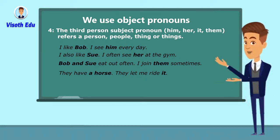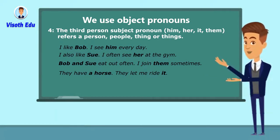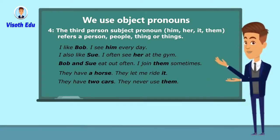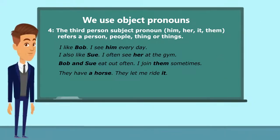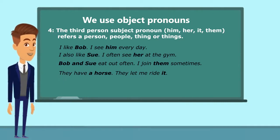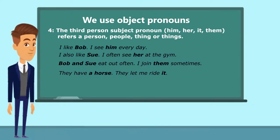'They have a horse, they let me ride it' — 'it' is the object pronoun that takes the place of a horse. 'They have two cars, they never use them' — 'them' is the object pronoun that takes the place of two cars. If you enjoyed today's lesson, please write a comment below — I really want to know about you. Tata for now!